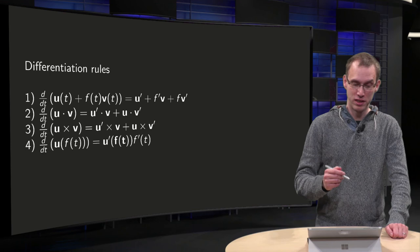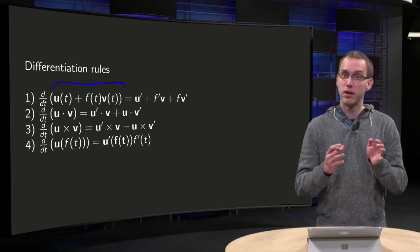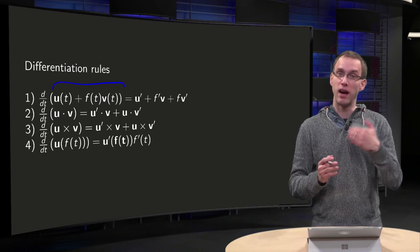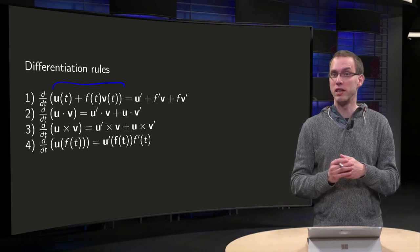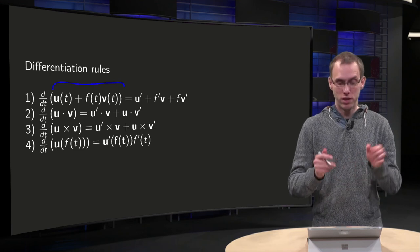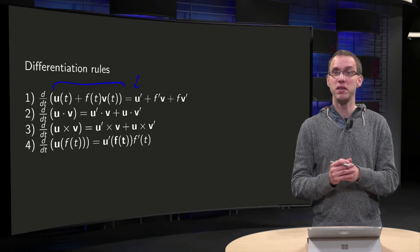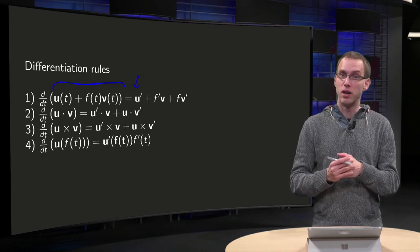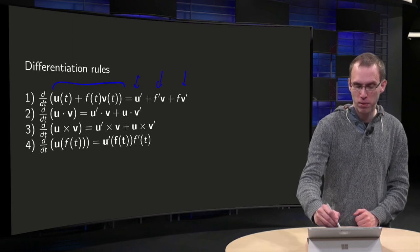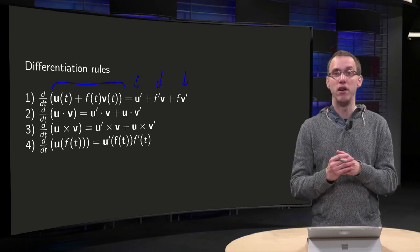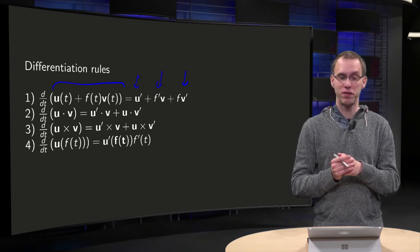First, the linearity of differentiation. If you take the derivative of u plus f times v, where f is a scalar and u and v are two vectors, it is linear, so it is d/dt of u, which is u prime, plus d/dt of f times v. And here you can use the normal product rule, so you get f prime times v plus f times v prime. So vector functions obey the normal linearity rules for differentiation.